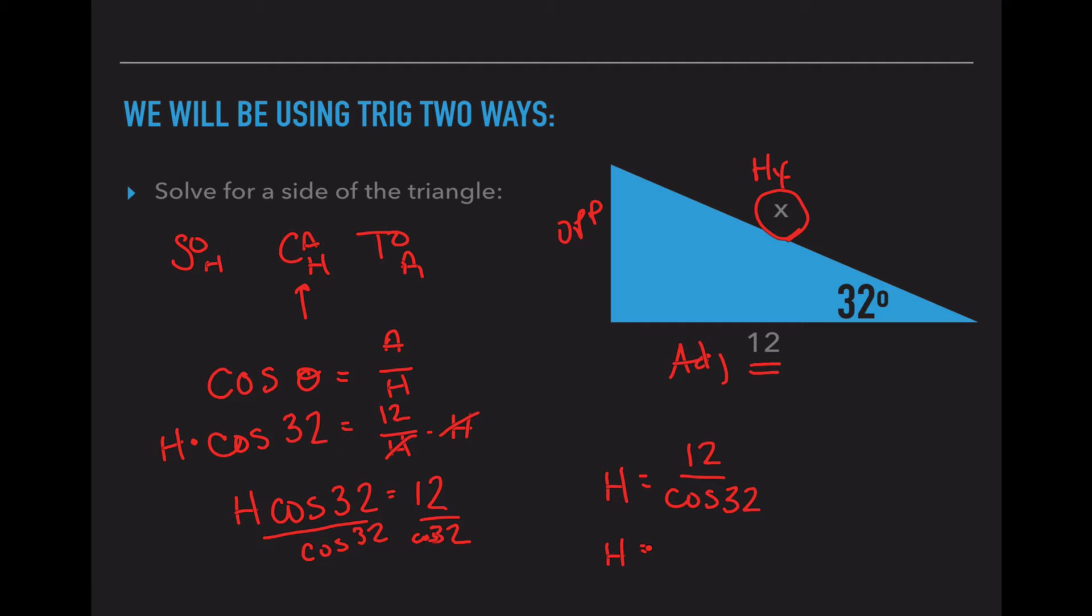And when we put that into our calculator, we are left with a value of h being 14.15. Now that's a length and since there are no units given in this problem, there are no units for us to mark. So we can just circle our answer of the hypotenuse value being 14.15.